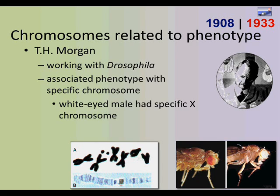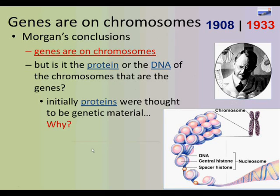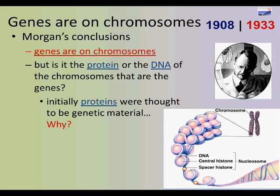Morgan found that a fruit fly's eye color was dependent on whether a certain chromosome was present in the sample. He looked at the amber or wild-type eyes, which have an orange look, and also at the white-eyed variety. His conclusion was that if genes — or why things look the way they do — are related to different colored eyes, it must have something to do with the chromosomes. This then raised the question: is it a protein or the DNA of the chromosomes causing this?